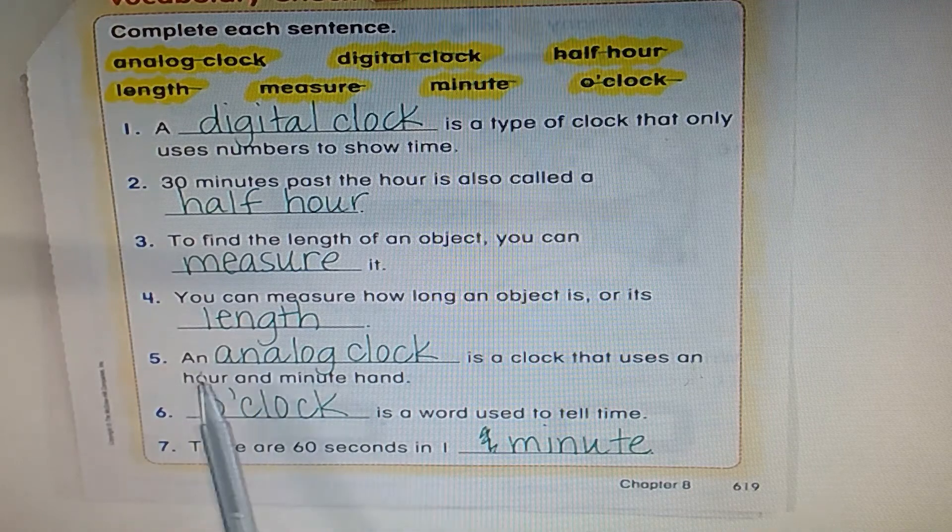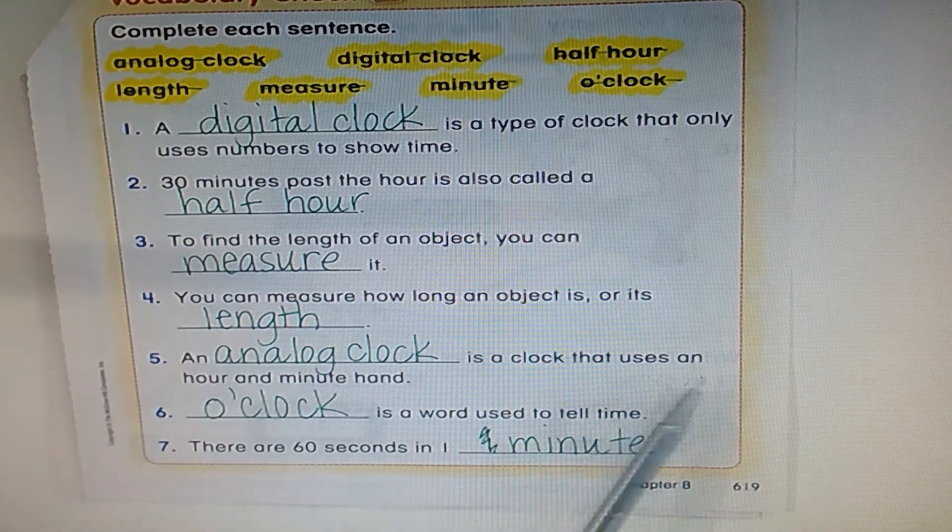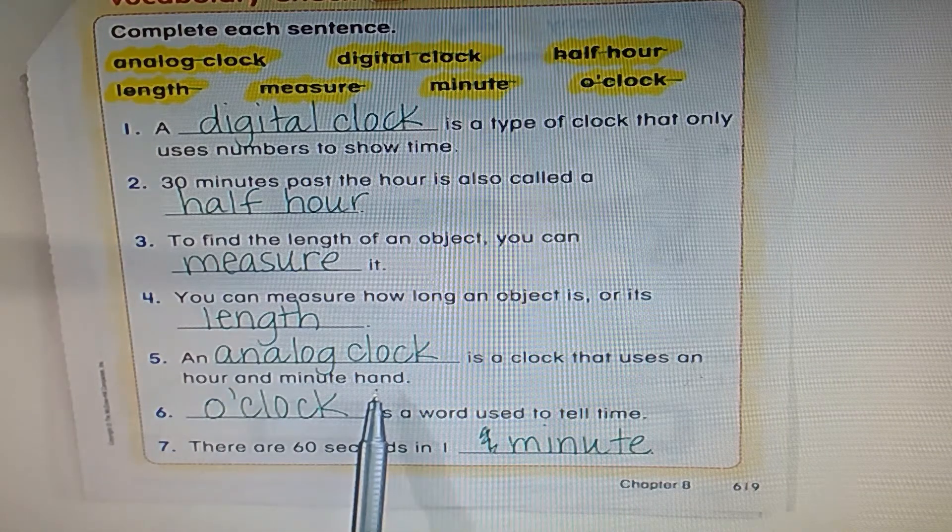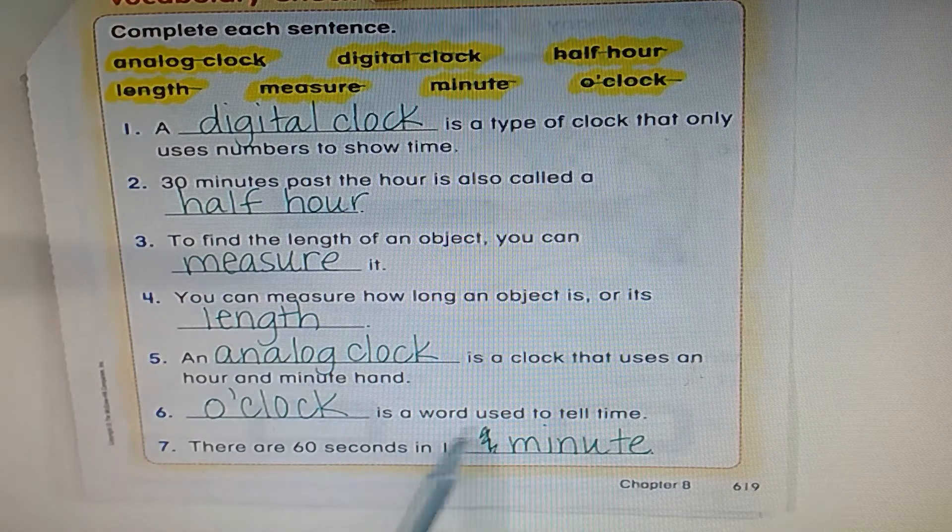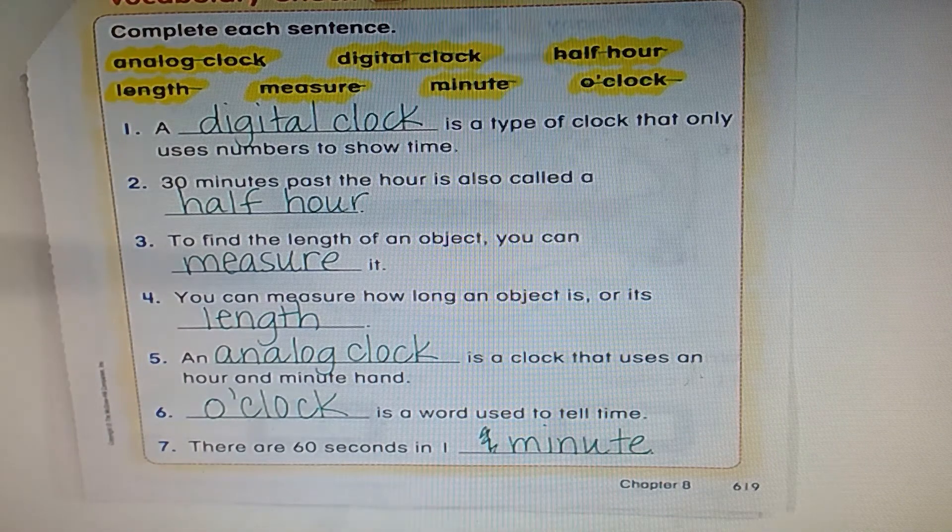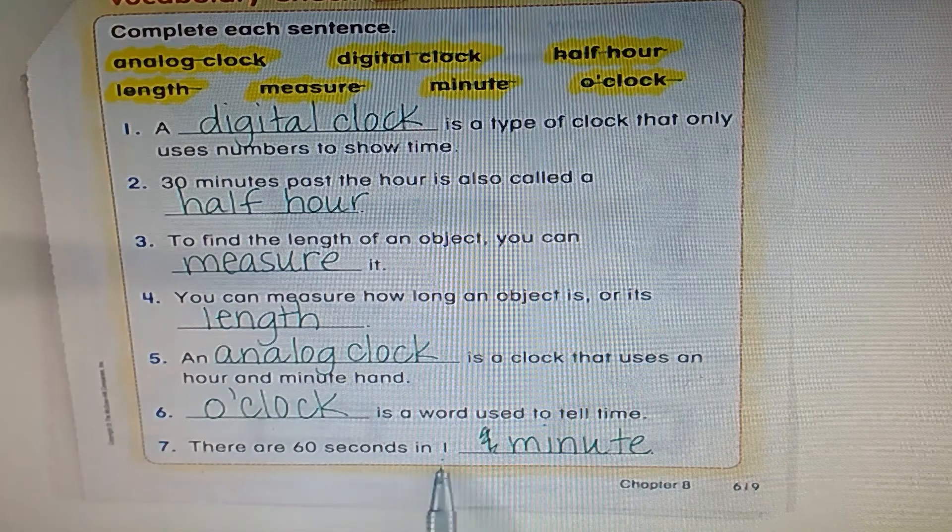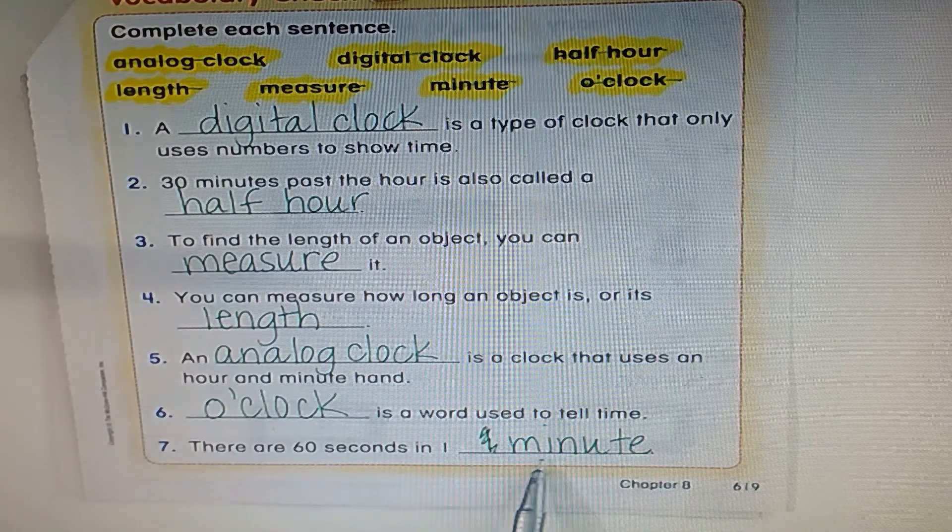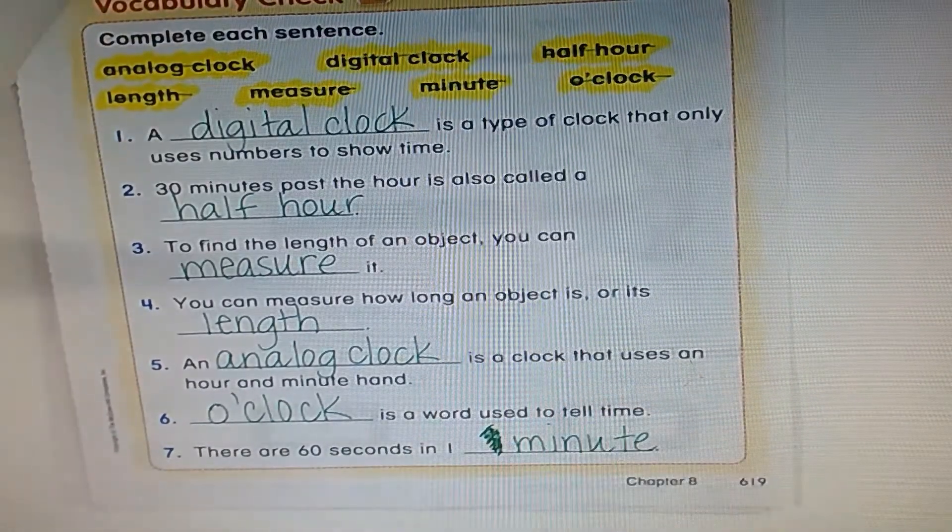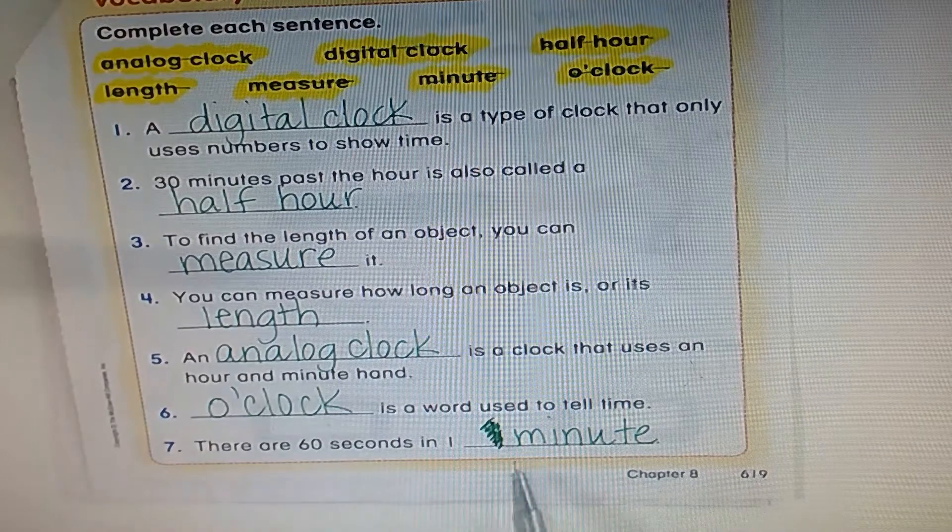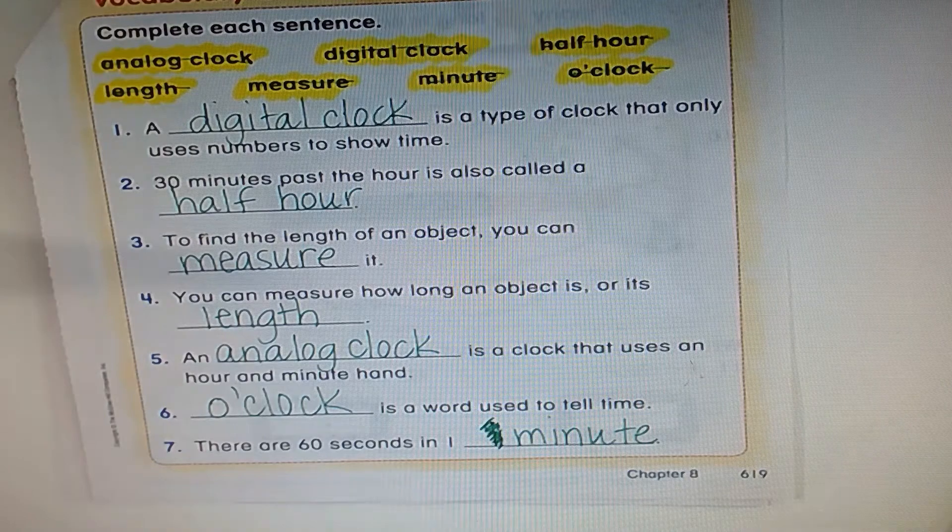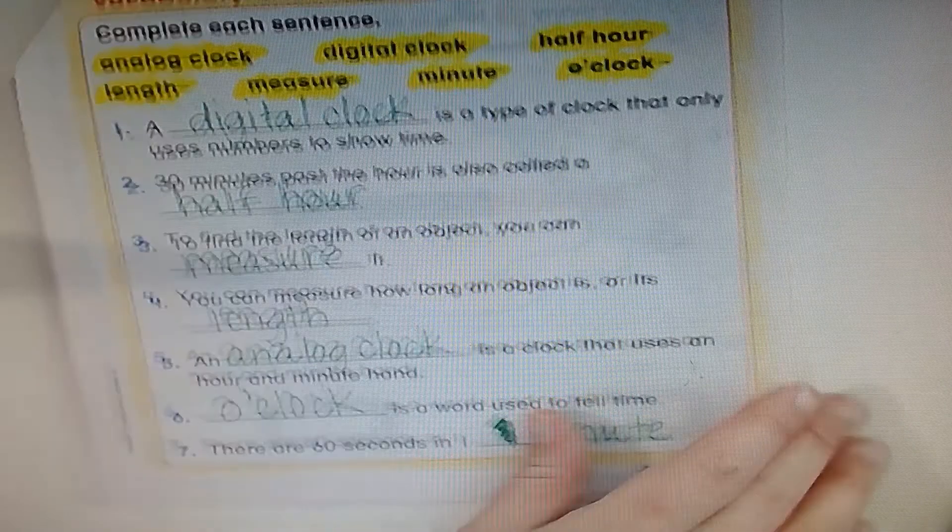An analog clock is a clock that uses an hour and minute hand. And o'clock is a word used to tell time. And there are 60 seconds in one minute. I had a mess up right there because I'm using this green pen so that you can see it better. You would have been able to erase it if you messed up there. But there are 60 seconds in one minute. Excellent work with those vocabulary words.